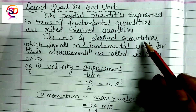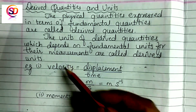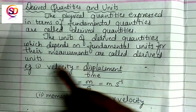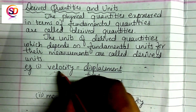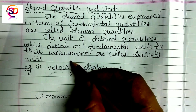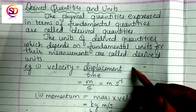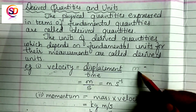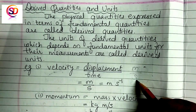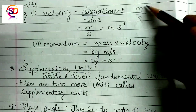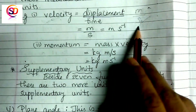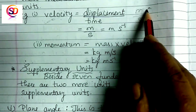The units of derived quantities, which depend upon the fundamental units for their measurement, are called derived units. Velocity is expressed in terms of displacement and time. Displacement is measured in meters and time in seconds, so the unit of velocity is meter per second — that is a derived unit, formed from two basic fundamental units. Another example is momentum: momentum equals mass times velocity, so its unit is kilogram meter per second.